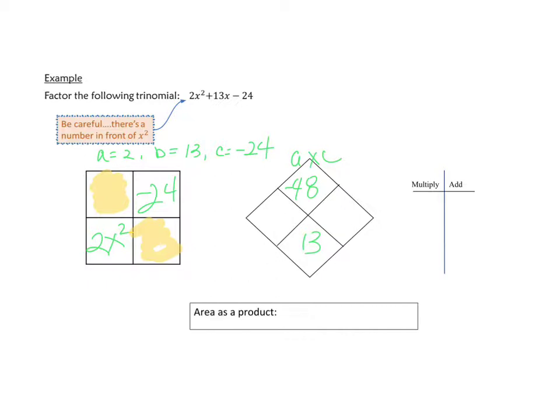All right. The way we do that is we ask ourselves what two numbers multiplied together equal negative 48 and add up to positive 13. I remind you that the only way I can get a negative product is if I have a negative and a positive multiplied together. So, I just go through my numbers. Negative 1 times 48 is negative 48, but it doesn't add up to 13. It adds up to 47. Negative 2 and 24. Again, the product is correct, but it adds up to 22, so it doesn't work for us.